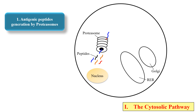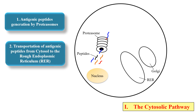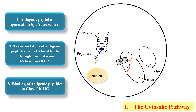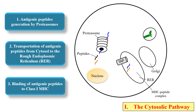Now these small antigenic peptides are moved into the rough endoplasmic reticulum. For this there is a protein called TAP — transport associated protein — through which these antigenic peptides move into the rough endoplasmic reticulum. As you can see here, these antigenic peptides are now moving through TAP into the RER. Now within the RER, they will bind to the class 1 MHC molecule. Here this green shape represents the class 1 MHC molecule, and within the RER these small antigenic peptides bind to this class 1 MHC molecule. Now this MHC-peptide complex moves to the Golgi complex and ultimately moves via secretory vesicle to the surface of the cell.